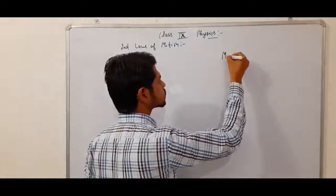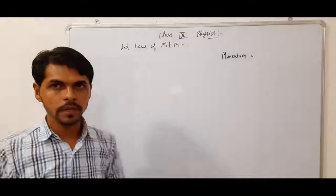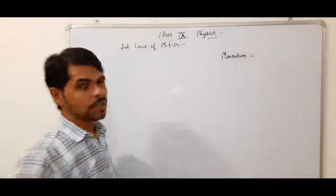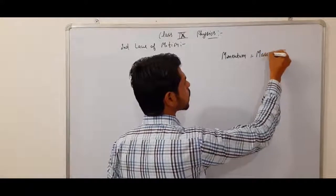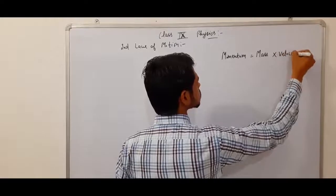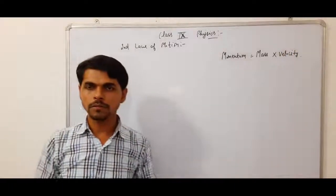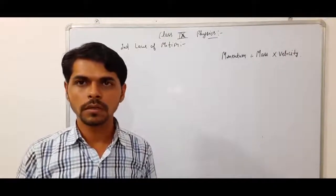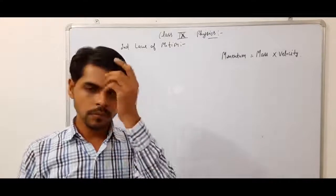What is momentum of a body? Momentum means mass into velocity of a body — the mass of the body multiplied by the velocity with which the body is moving — that gives us the momentum.